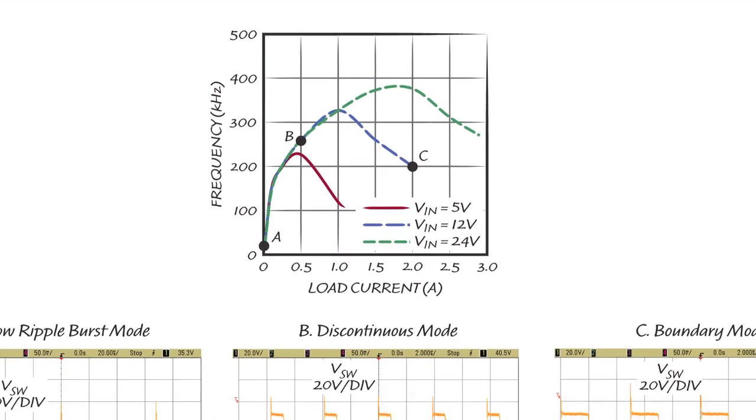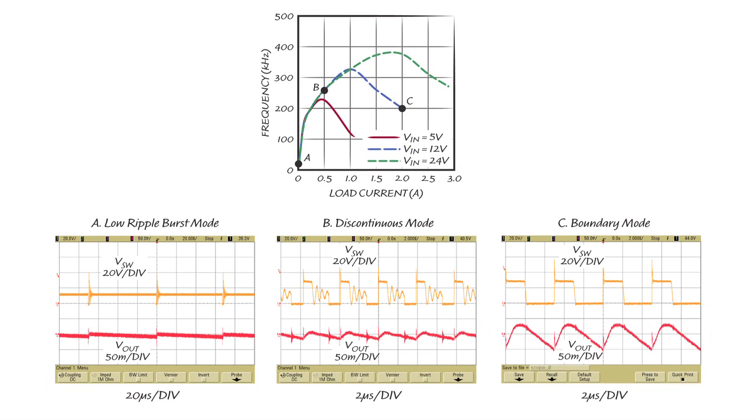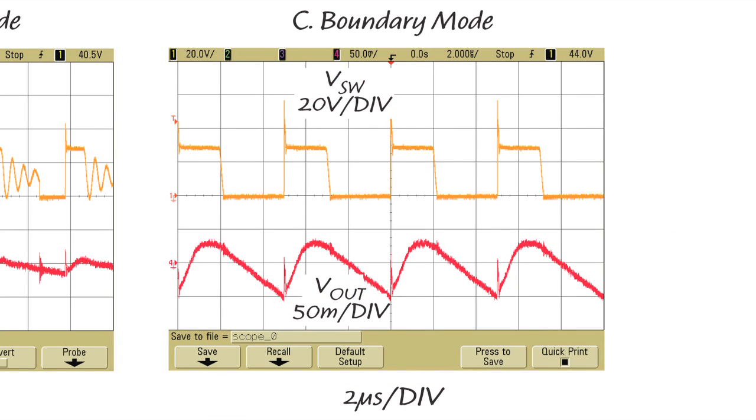The bottom scope shots show the waveforms at three operating points. At point C, with 2A load current, the LT8302 works in quasi-resonant boundary mode, in which the primary switch turns back on when the secondary current goes to zero and the switch voltage rings to its valley. When the load decreases, the primary switch current limit decreases, but the switching frequency first increases and then decreases when it gets into discontinuous mode.